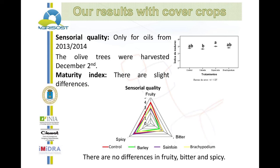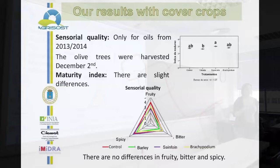For the sensory analysis — only for the last campaign of olive oil — we found differences related to the maturity index, which is determined by the moment you harvest the olive fruit. The color, polyphenol content, and pigments change with the maturity index. We haven't found differences between the oils in terms of fruitiness, spiciness, and bitterness — which are good characteristics of olive oil.